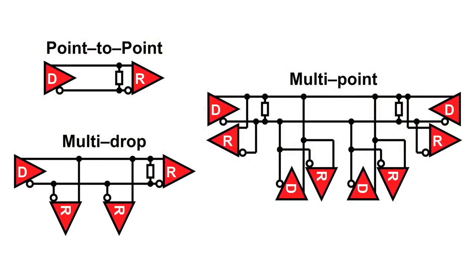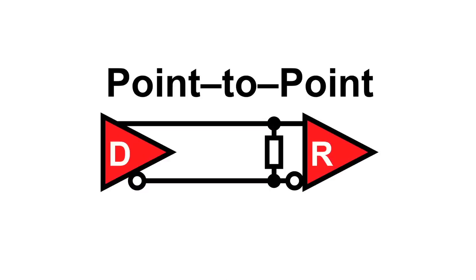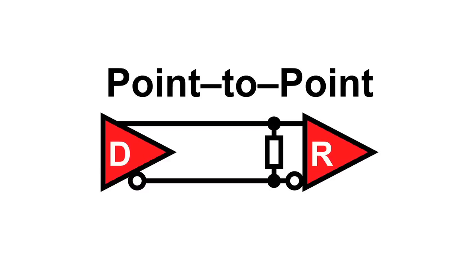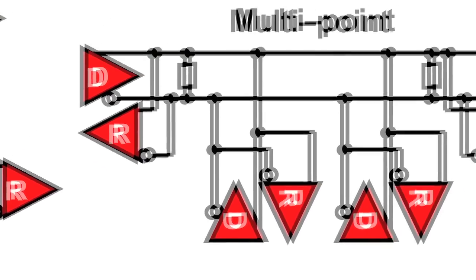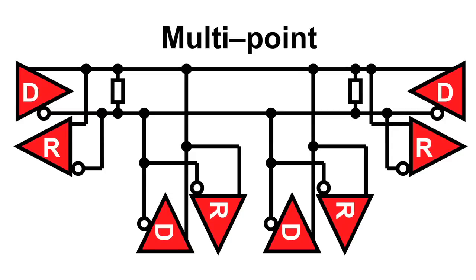The next topic to understand is bus topology. Point-to-point interfaces consist of just one driver and one receiver, as shown in the diagram on the top left. A multi-drop bus, as seen in the lower left diagram, consists of one driver with multiple receivers connected. A multi-point bus, as shown on the right, consists of multiple drivers and receivers, or transceivers. As signals sourced in the center of the bus will travel in either direction, termination at both ends of the line is essential, and drivers must be capable to drive twice the load.